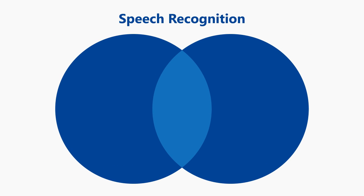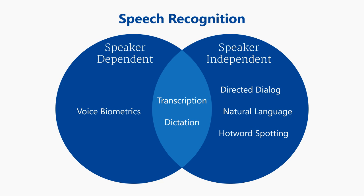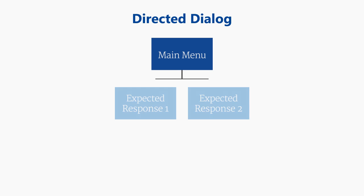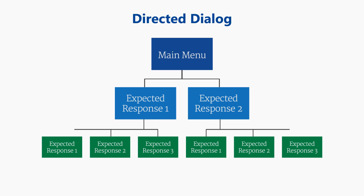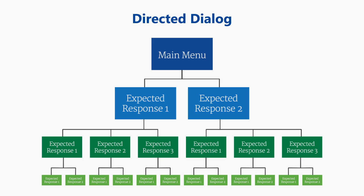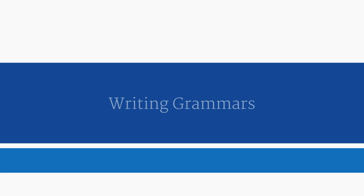Though speech recognition is a broad technology that has many possible variations, most users of the Lumenvox automatic speech recognizer will be building directed dialogue applications that direct users to speak specific words or phrases. The next video in the series will take a first look at writing grammars, which are the files that describe to the recognizer what words can be expected from users.